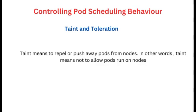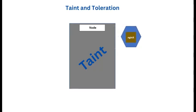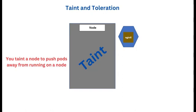So what is a taint? From the word taint, which means to contaminate or pollute something — when something is contaminated, you won't want to have anything to do with it. When you taint a node in Kubernetes, it means that pods will be repelled away from that node and will not be able to run on it. Taint is the opposite of node affinity, which is a property of pods that attracts them to a set of nodes.